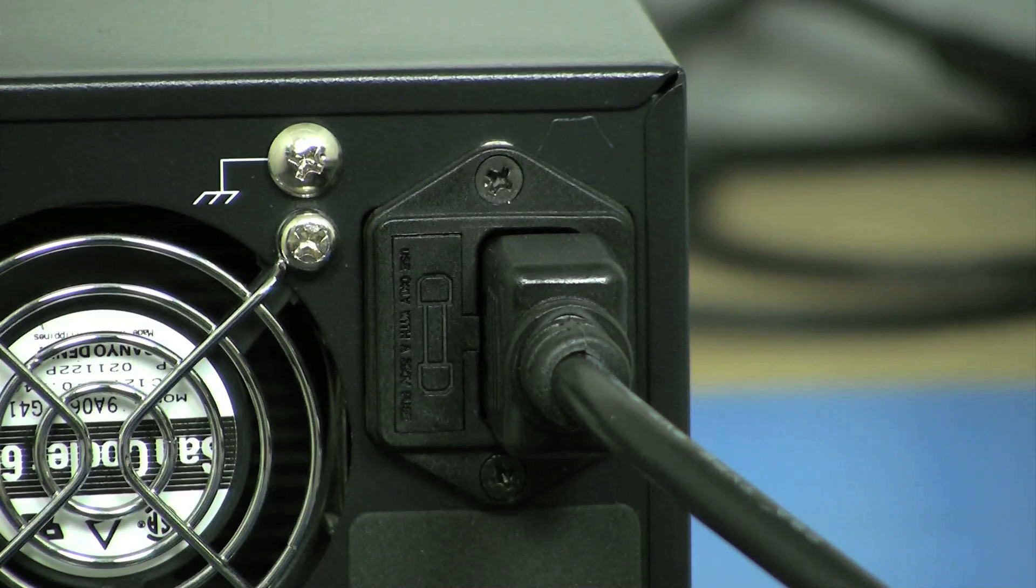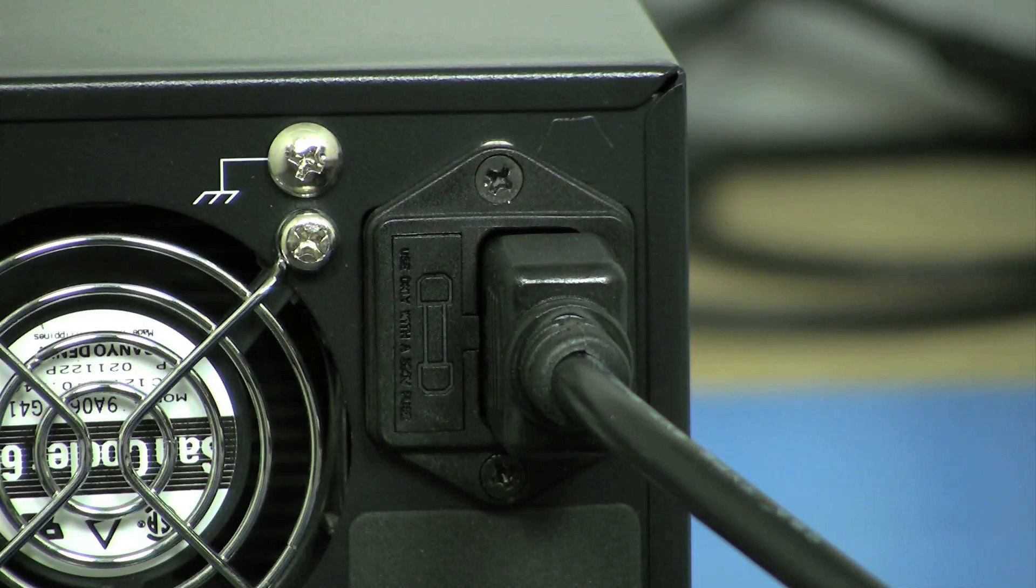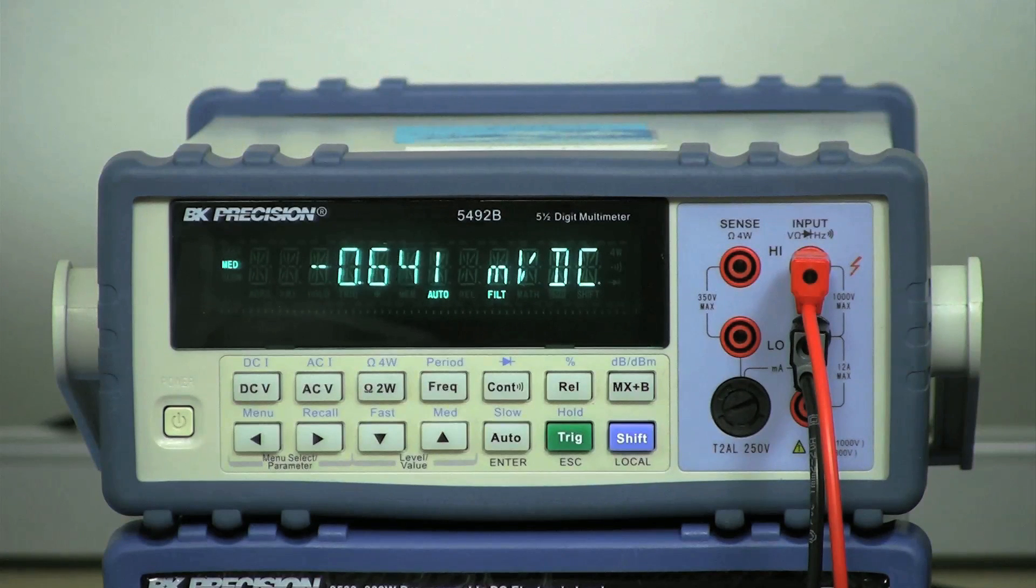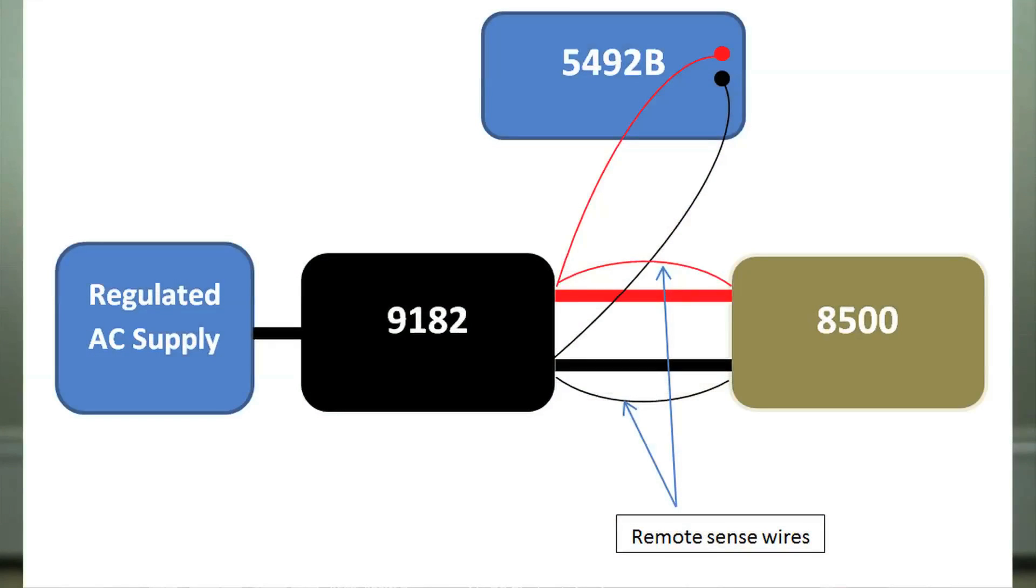A regulated AC power supply will be used to power up the 9182 which will eliminate any load effects caused by fluctuations from the AC input. The 5492B multimeter will be probing the output terminal of the power supply to measure for the voltage change. Here is a diagram of my setup.